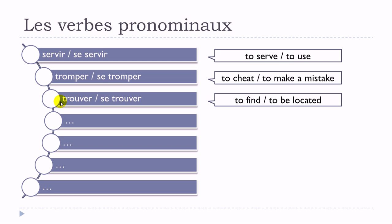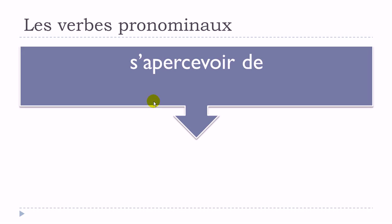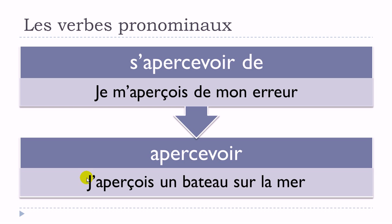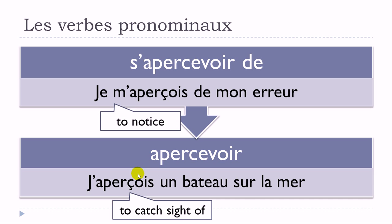To illustrate: je m'aperçois de mon erreur — I notice my mistake — uses s'apercevoir, meaning 'to notice'. But je m'aperçois un bateau sur la mer — I catch sight of a boat on the sea — uses apercevoir, meaning 'to catch sight of'. They look the same since both contain apercevoir, but the meaning is really different.